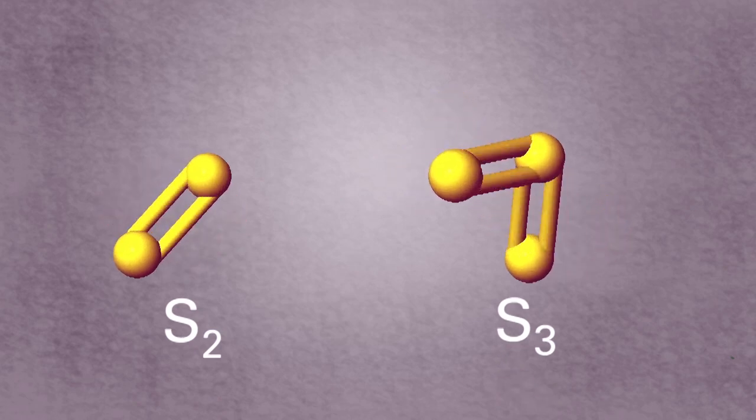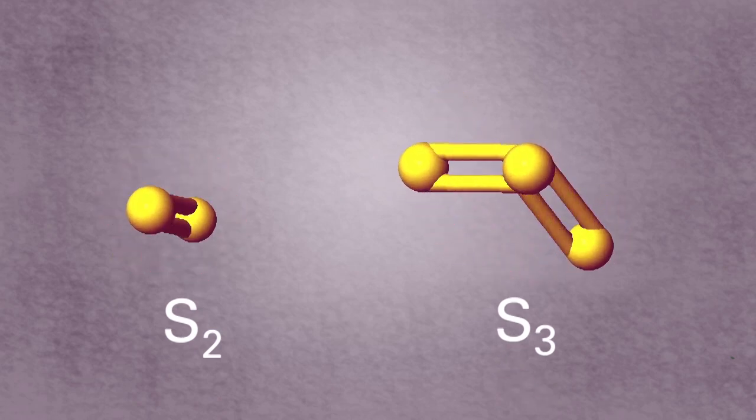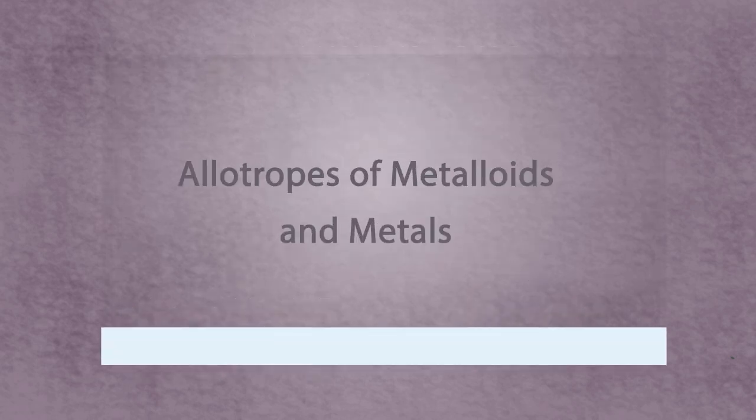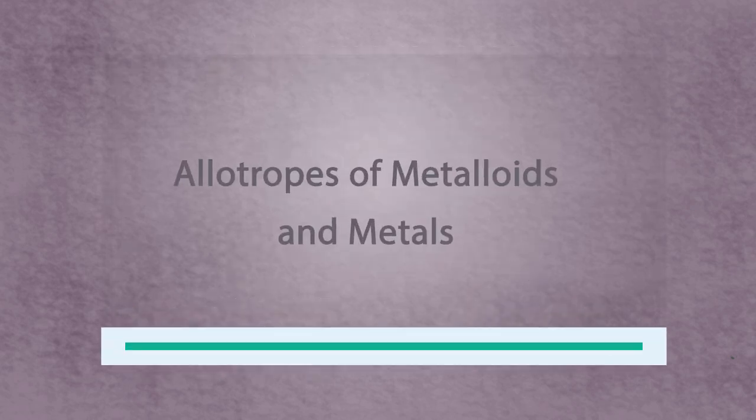So far, we have only discussed allotropes of selected nonmetals. This allotropism also exists in metalloid elements and metals, which you can learn about in the next lesson of our series.